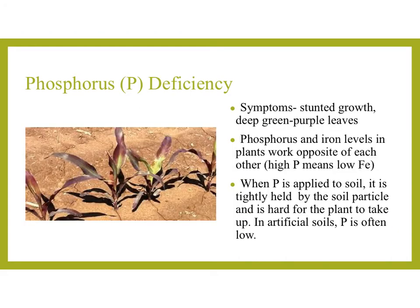So what happens when there's a deficiency of phosphorus? The symptoms include stunted growth and deep green-purple leaves, as seen in the picture. Phosphorus and iron levels in plants work opposite of each other — high phosphorus means low iron, and low phosphorus means high iron. When phosphorus is applied to soil, it is tightly held by the soil particle and very hard for the plant to take up. So in artificial soils, phosphorus is often very low.